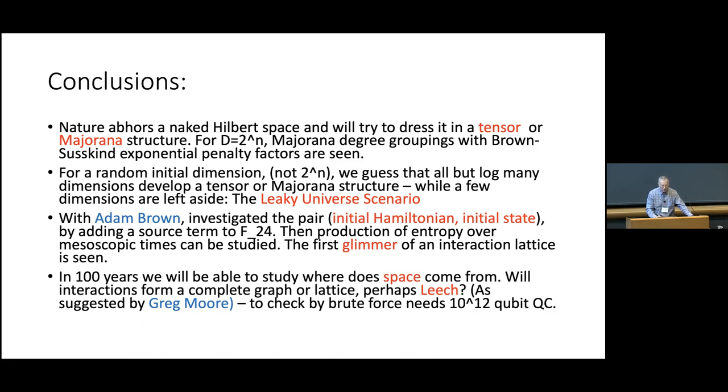Then the third bullet here is the part I just described that Adam joined the collaboration. We added an initial state, and we found that the state vector tended to line up in a very interesting way with the tensor decomposition. And we see in this, in the fact that we couldn't, that the state vector wouldn't completely line up in a triple factorization, the first glimmer of an interaction lattice. And in an earlier talk, Greg Moore said, well, why don't you try to connect with string theory? Why don't you consider like 10 to the 12th qubits and see if you break into two-body interactions?